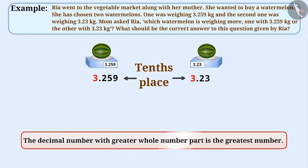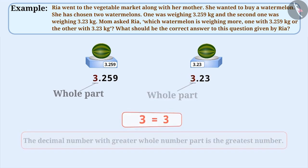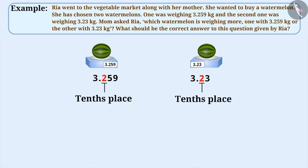The decimal number with greater whole number part is the greatest number. The whole part of 3.259 is 3 and the whole part of 3.23 is also 3. That means the whole part of both decimal numbers is the same. In this situation, we will compare the digits at tenths place. The digits at tenths place in both numbers is 2.